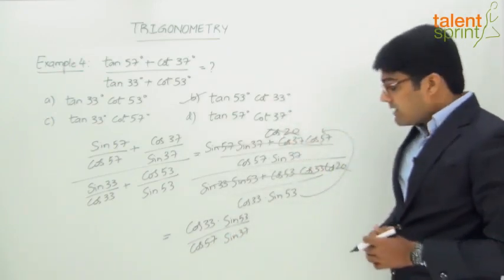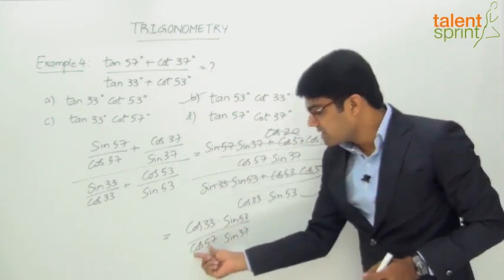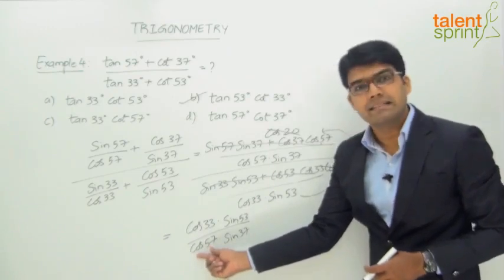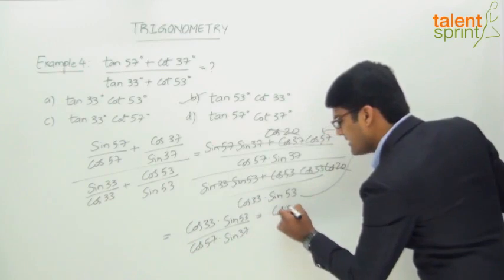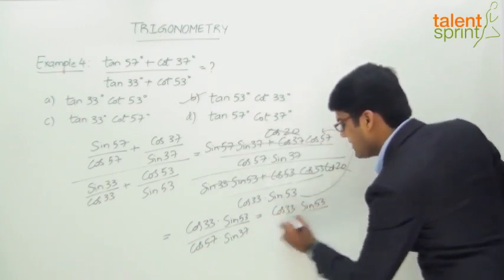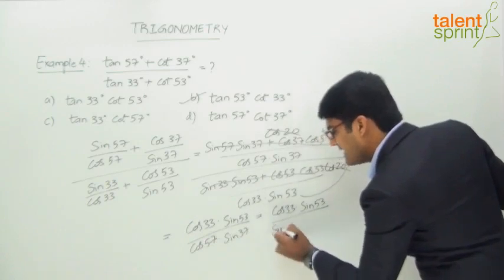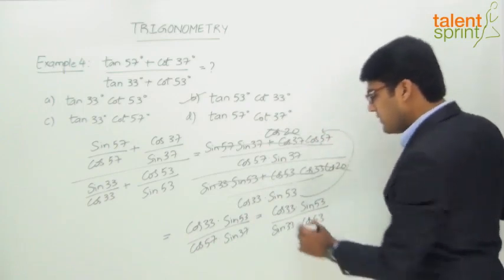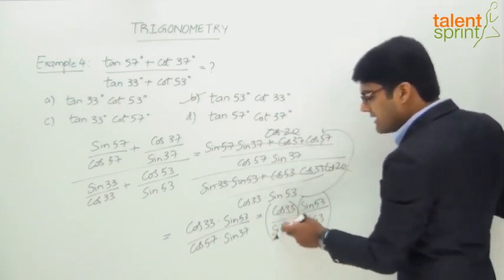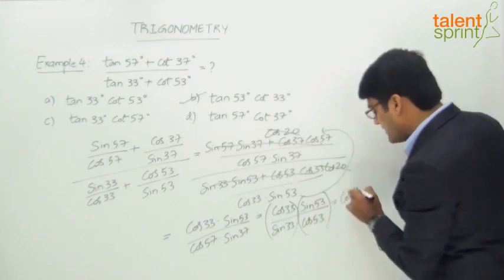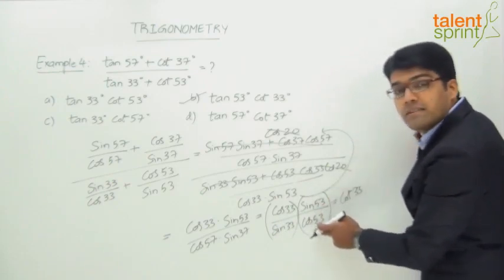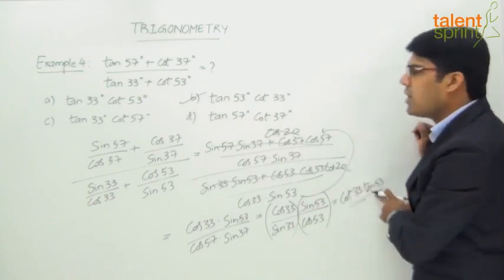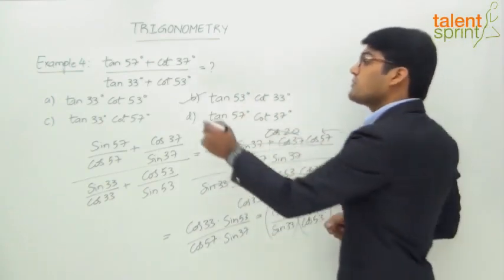To simplify further: cos57 = sin33, and sin37 = cos53. Substituting, we get (cos33·sin53) / (sin33·cos53). This is (cos33/sin33)·(sin53/cos53) = cot33·tan53. So the final answer is tan53·cot33, which is option B — the same result as before.